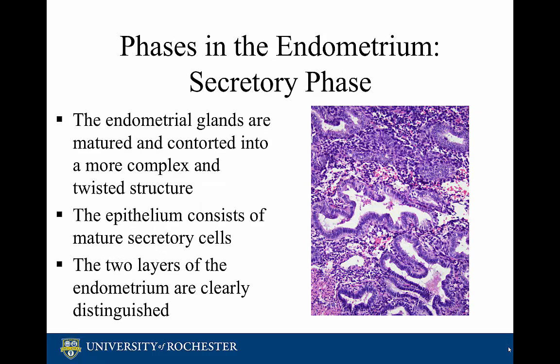In the secretory phase of the menstrual cycle, the endometrial glands are matured and contorted into more complex and twisted structures. The epithelium consists of mature secretory cells, and the two layers of the endometrium — the stratum basalis and the stratum functionalis — are clearly distinguished.